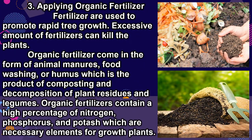Three: Applying organic fertilizer. Fertilizers are used to promote rapid tree growth; excessive amounts of fertilizers can kill the plants. Organic fertilizer comes in the form of animal manures, food washings, or humus, which is the product of composting and decomposition of plant residues and legumes. Organic fertilizers contain a high percentage of nitrogen, phosphorus, and potash, which are necessary elements for plant growth.